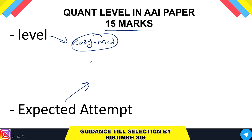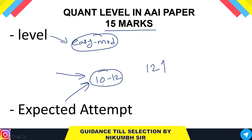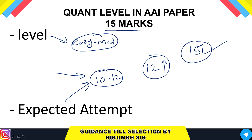All students preparing for AAI can easily score 10 to 12 marks in the quant section. But if you want to be in the merit, you should score 12 or above — and it is possible to score 15 marks if you cover all the listed topics properly. Scoring 15 will be a very strong point and increase your chances, since even one mark can make a big difference in rank.